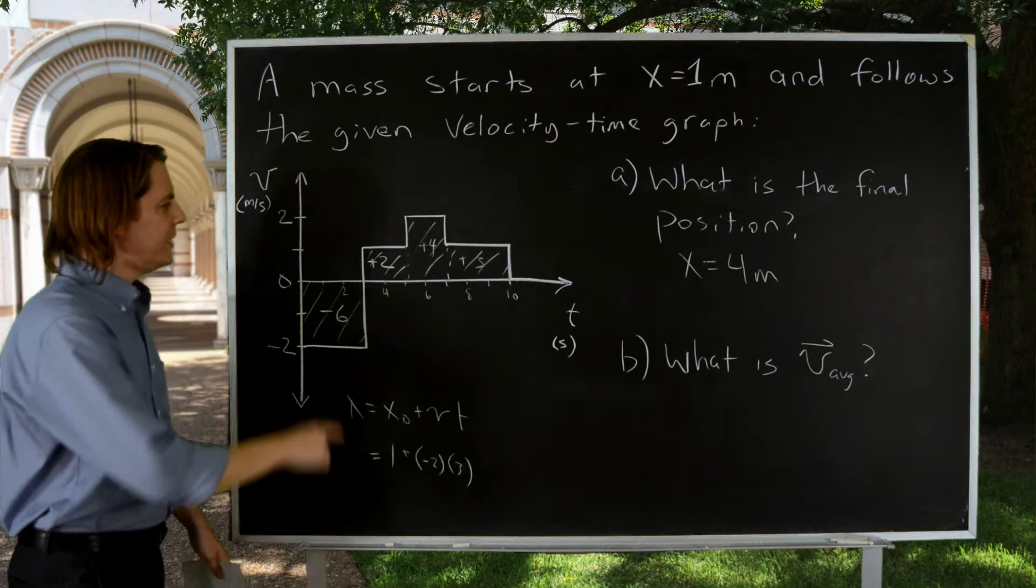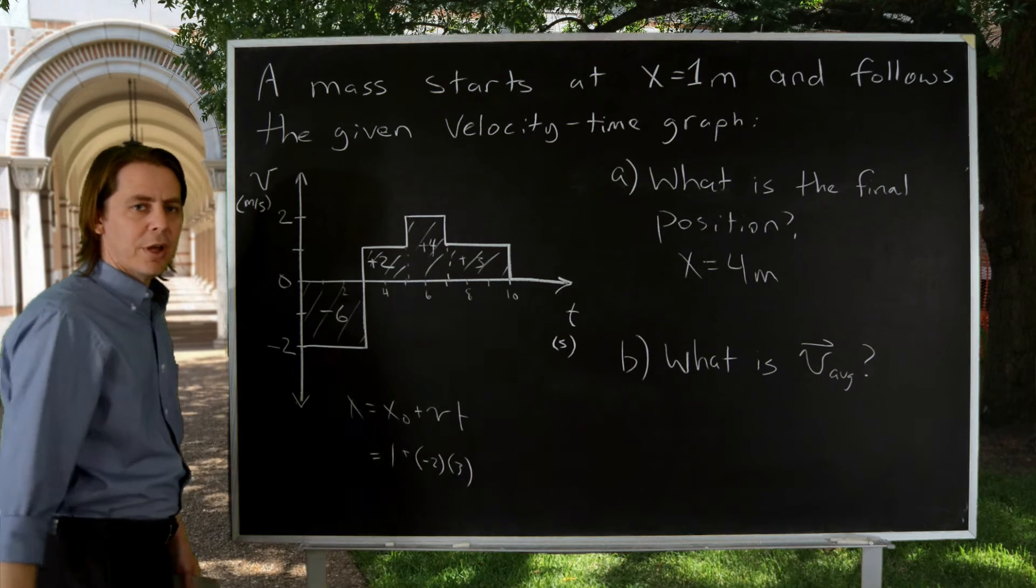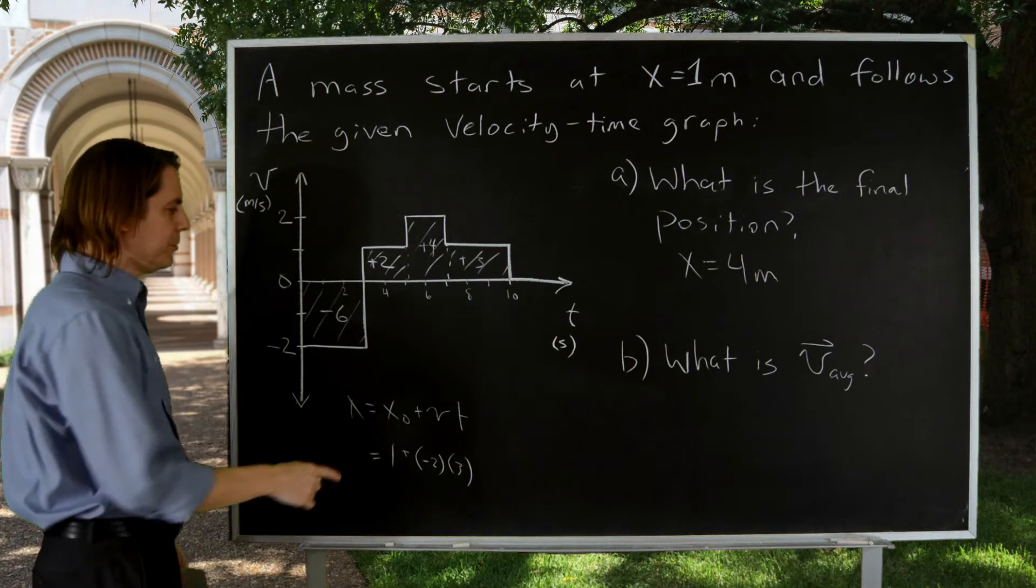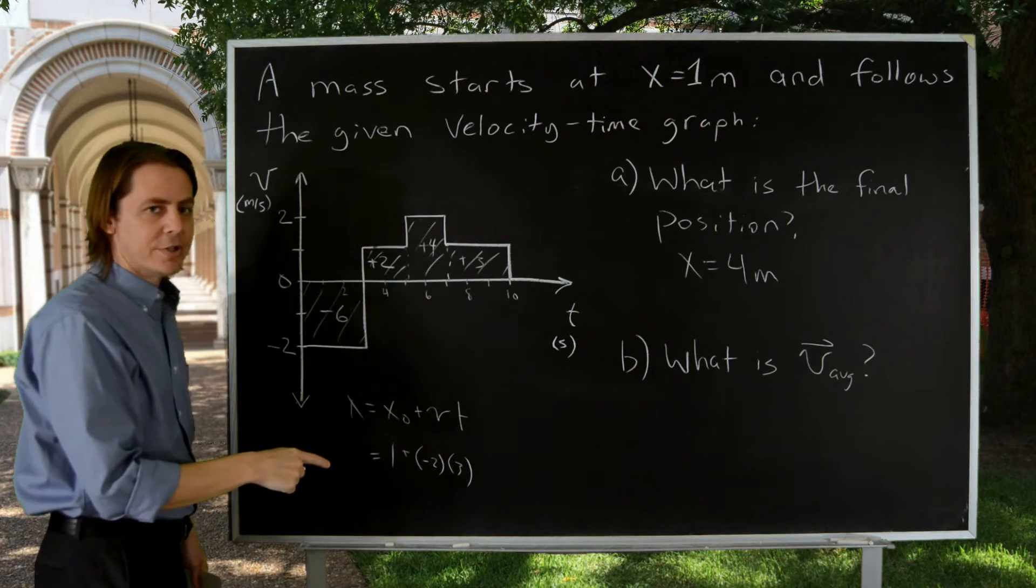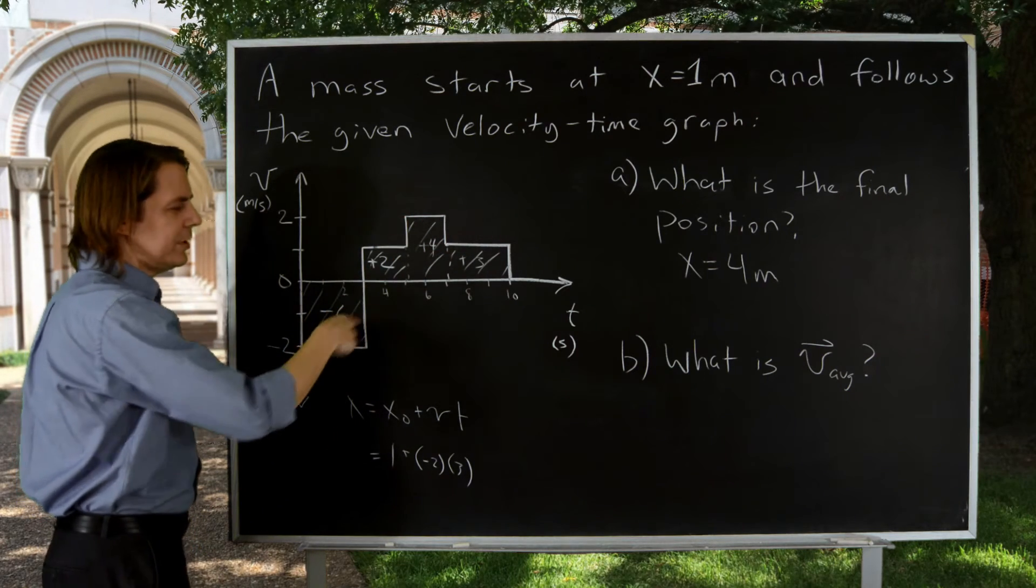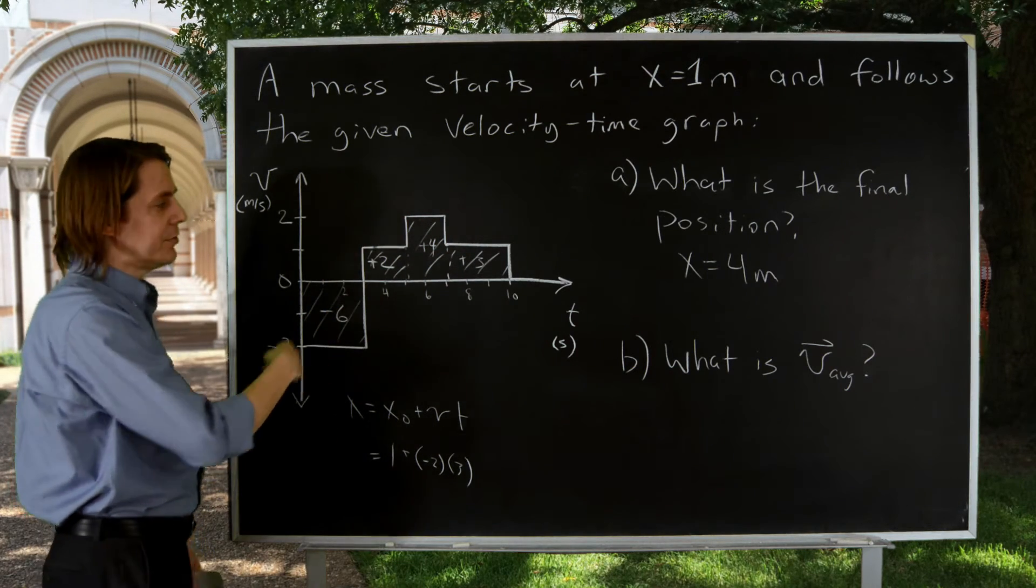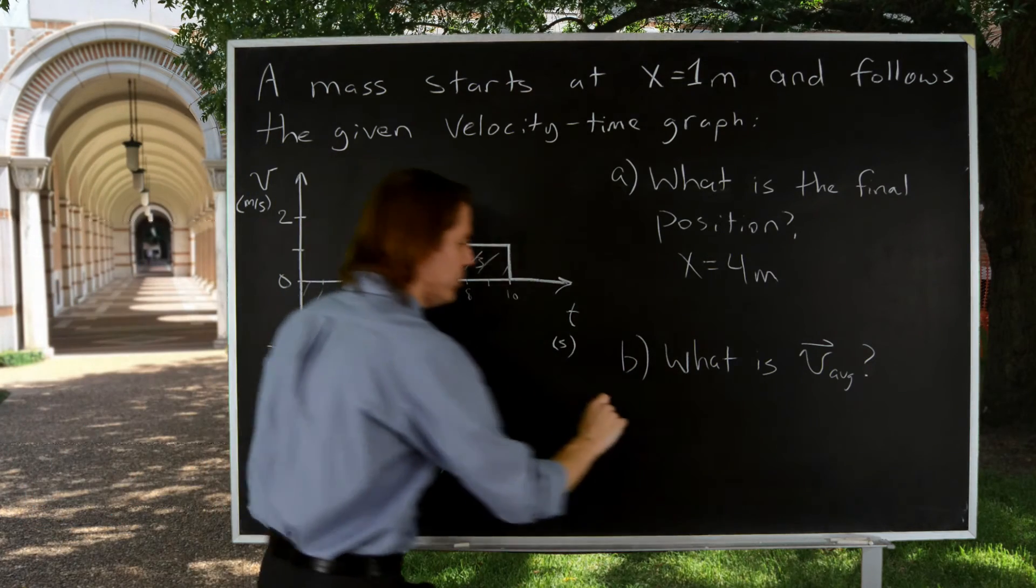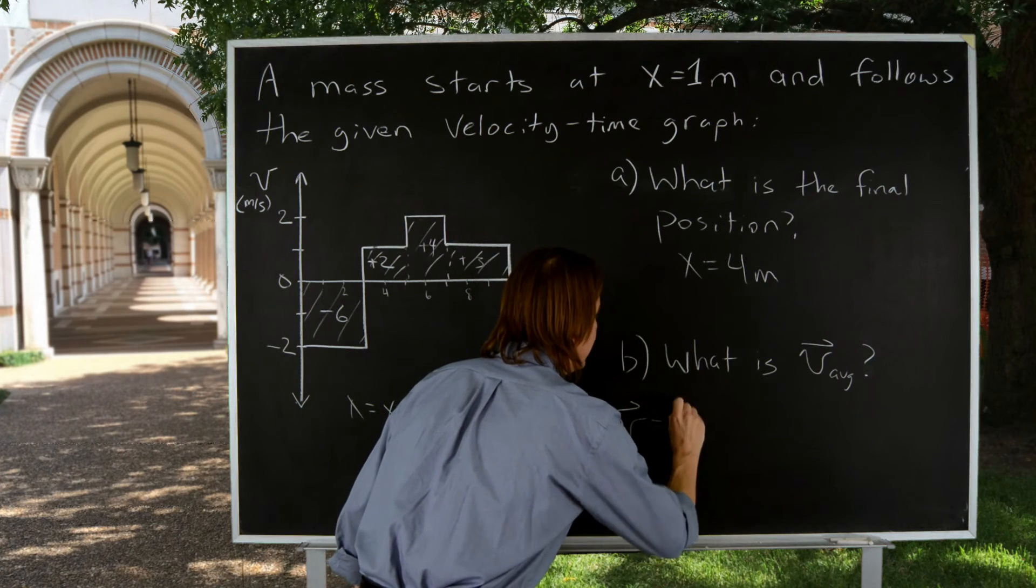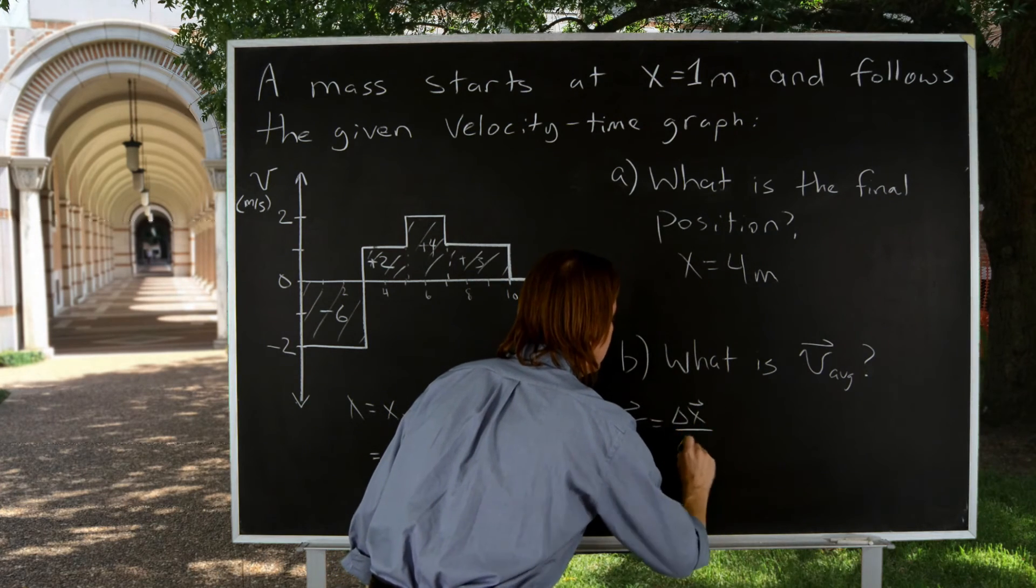Let's look at the average velocity. It means for the entire trip. Keep in mind, average velocity doesn't just mean average the velocities, and that's not minus two plus one plus two plus one, get the average. They went those velocities for different amounts of time, so the average velocity is a little more complicated. Of course, the easy way to get it is just to go back to our definition of average velocity, and it's the displacement over delta t.